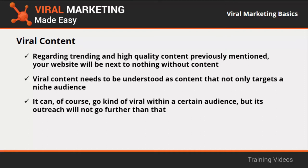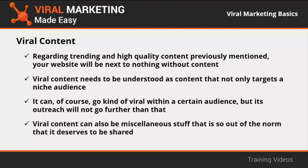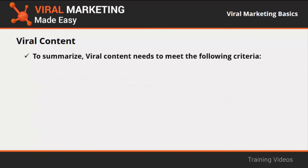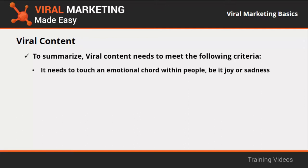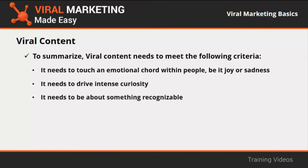For example, food recipes will only interest food-minded people — its outreach won't go further than that audience. An example of viral content is celebrity gossip, because celebrities inundate almost every aspect of popular culture and word about them will land on the news feed of anyone with a social network account. Viral content can also be miscellaneous stuff so out of the norm that it deserves to be shared, like new tech products or scientific discoveries. Viral content needs to touch an emotional cord, drive intense curiosity, and be about something recognizable.